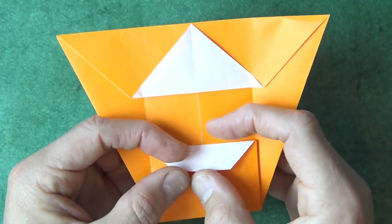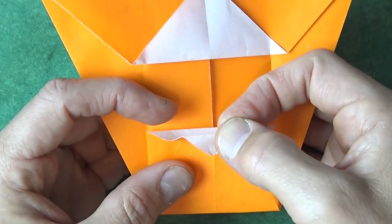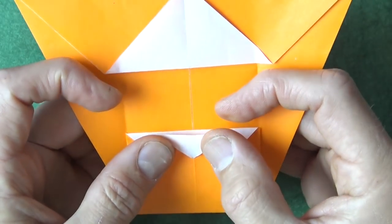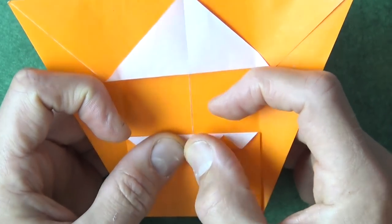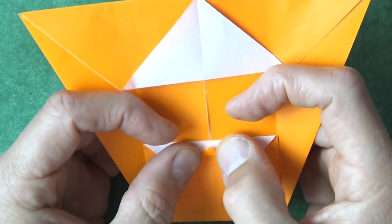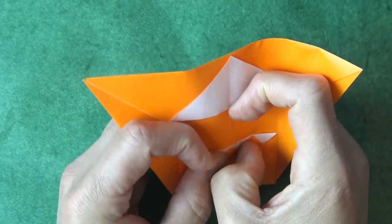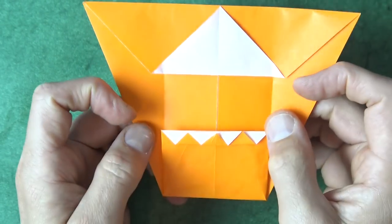And now fold this edge to this edge. And as you do it, let the flap swing down. And fold this corner up. And fold this corner up. It's a cyclops.